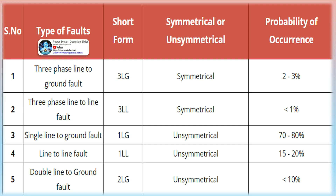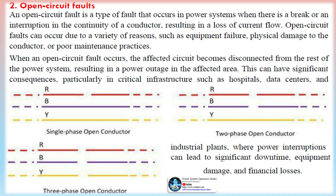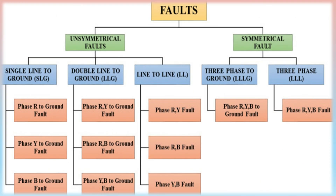Types of open-circuit faults: Open-conductor faults occur when a conductor in the power system is broken or disconnected, resulting in an open circuit, due to mechanical damage, corrosion, or faulty connections. Open-phase faults occur when one of the three phases in a three-phase power system is disconnected or broken, resulting in an unbalanced load, overheating of the remaining phases, and potential equipment damage and insulation breakdown. Neutral faults occur when the neutral conductor is broken or disconnected, resulting in an unbalanced load, over-voltage conditions, equipment damage, and safety hazards to personnel.